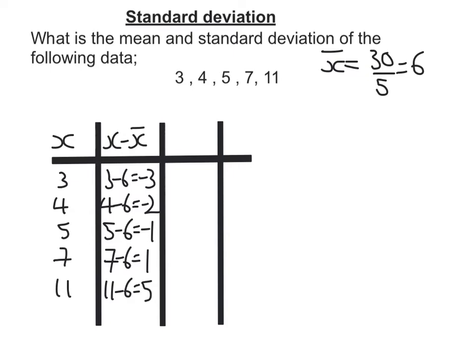Now, if you're doing this right, these answers should add up to 0. So negative 3, add negative 2, add negative 1 is negative 6. 1 and 5 is 6, so 6 and negative 6 is 0. So I am on the right lines.